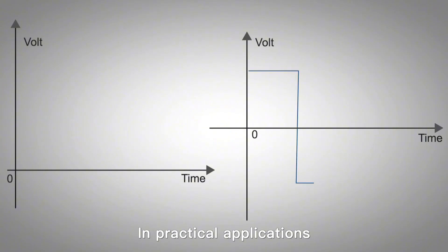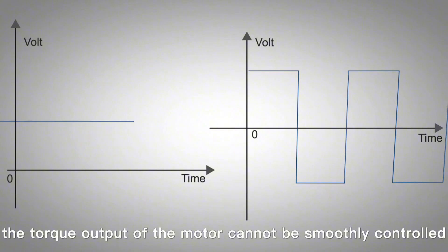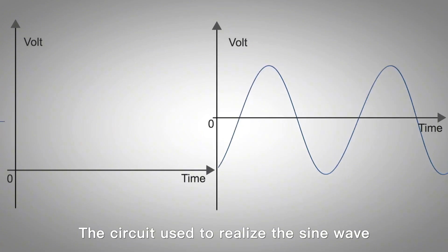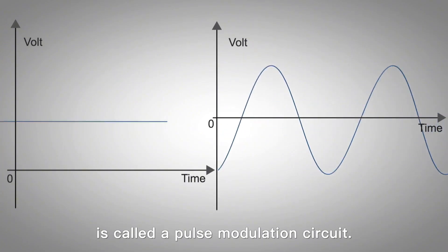In practical applications, it cannot smoothly control the torque output of the motor. How is the sine wave controlled? The circuit used to realize the sine wave is called the pulse modulation circuit.